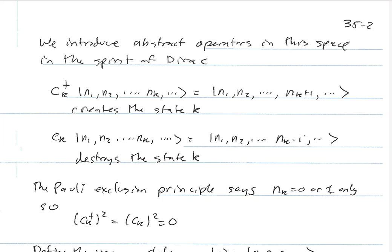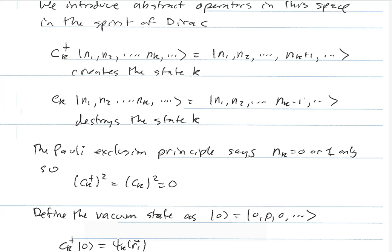The Pauli exclusion principle tells us that n_k can only be 0 or 1, so we must have c†_k squared and c_k squared both equal to 0. This is where things are very different from the photon creation and destruction operators. For photons, I could raise a† to any power because I could have an arbitrary number of photons in any given mode. But for electrons, we can have 0 or 1 and that's it. We also have to worry about something related to changes in sign, coming from the fact that the fermionic wave function must be totally anti-symmetric.